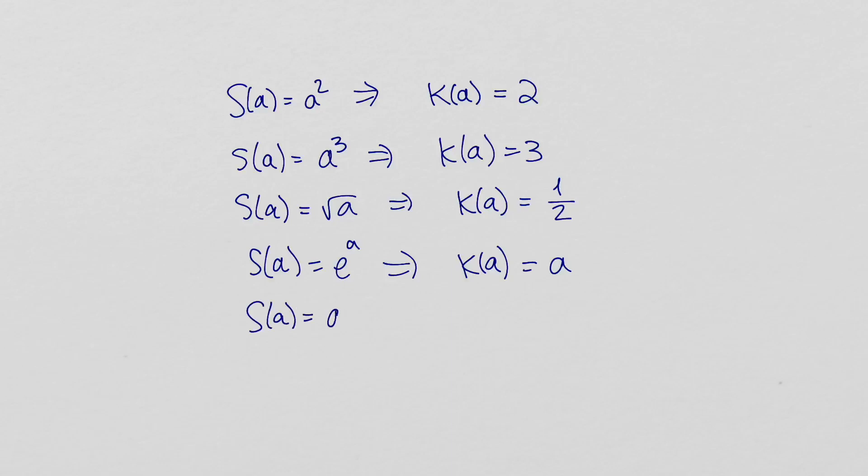The condition number of the function x minus 1 is x over x minus 1. In other words, it blows up as x gets close to 1. The condition number of a problem is the condition number of the function that maps the problem's initial data to the solution of the problem.